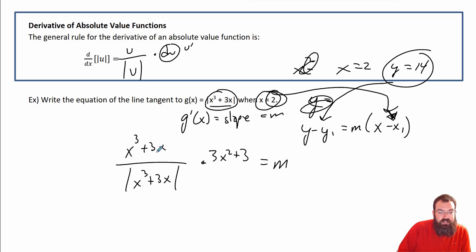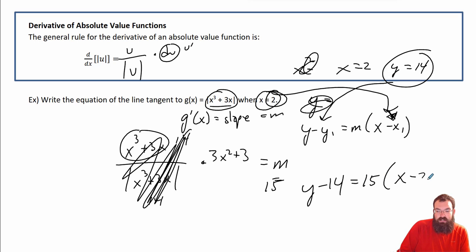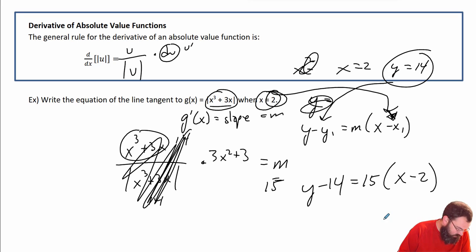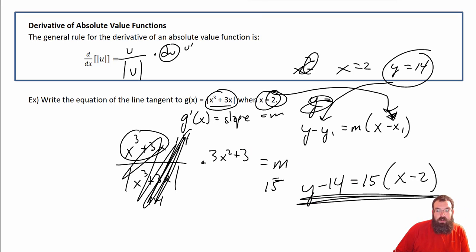Plugging 2 in: 2 cubed is 8, 8 plus 6 is 14, that's 14 over absolute value of 14 which is 14 — so that's just 1, that factor doesn't matter. Then plugging into u prime: 4 times 3 is 12, 12 plus 3 is 15. So our slope is 15. The tangent line is y minus 14 equals 15 times (x minus 2). Note: the notes may say 17 as the slope, but the correct slope is 15 — 2 squared times 3 is 12, plus 3 is 15.